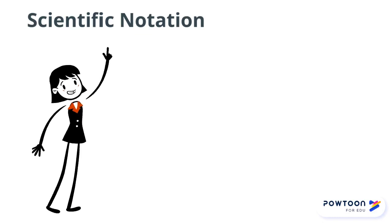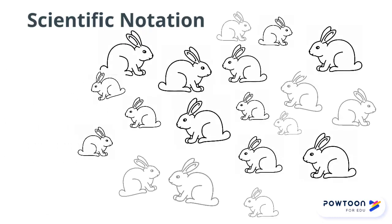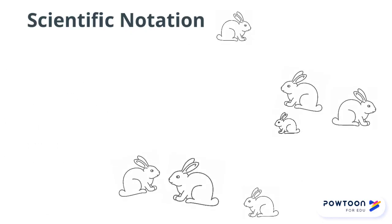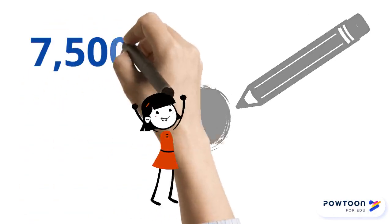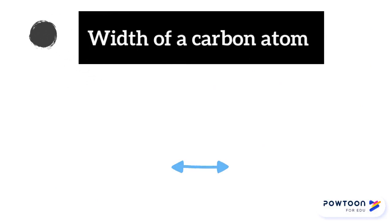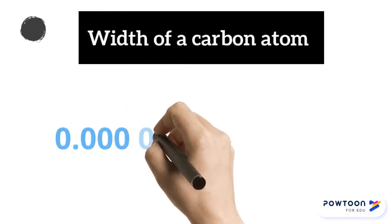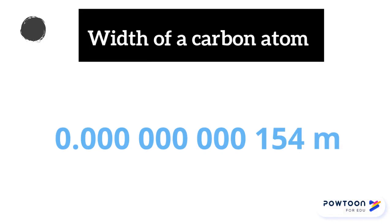Scientific notation is used to represent very large numbers or very small numbers. Both types are used extensively in chemistry. For example, the number of carbon atoms in a period made by a graphite pencil is 7.5 trillion, or the width of one of those carbon atoms is 0.0000000000154 meters.